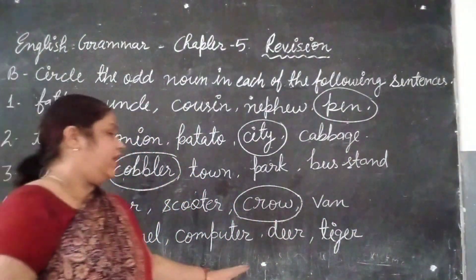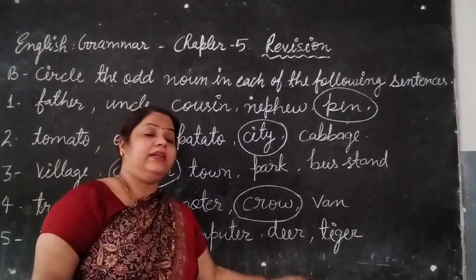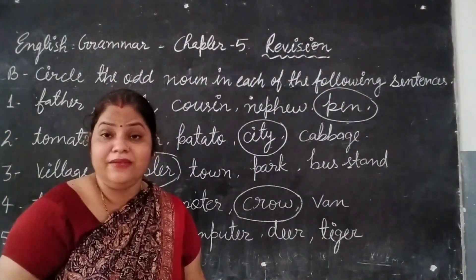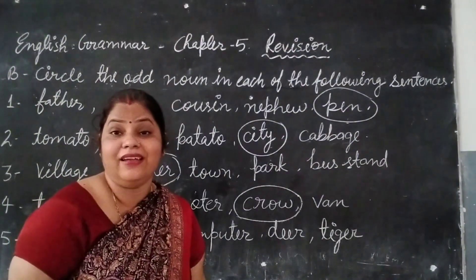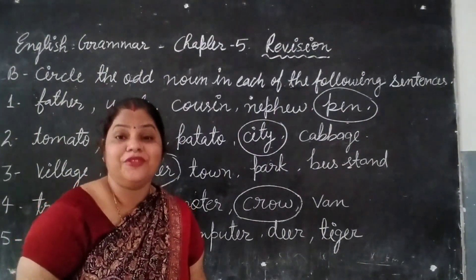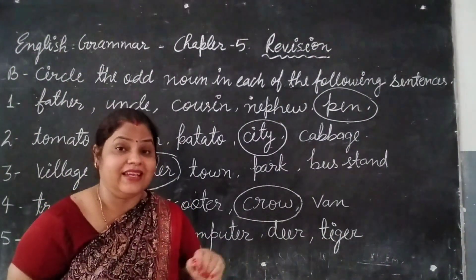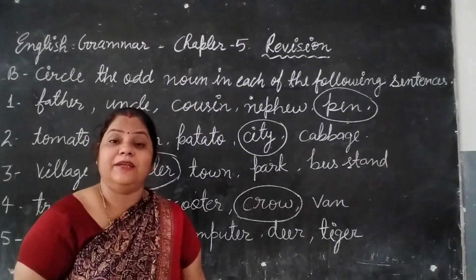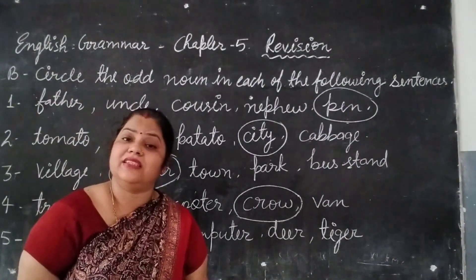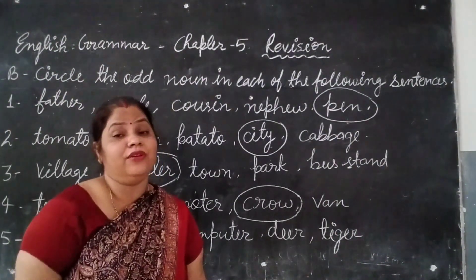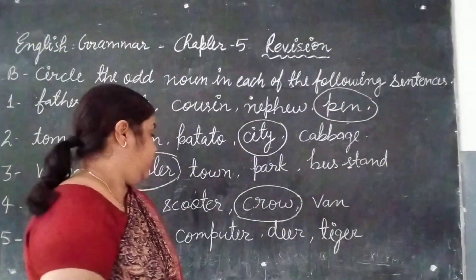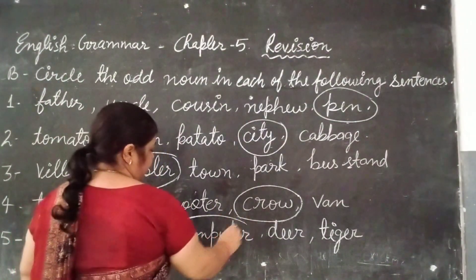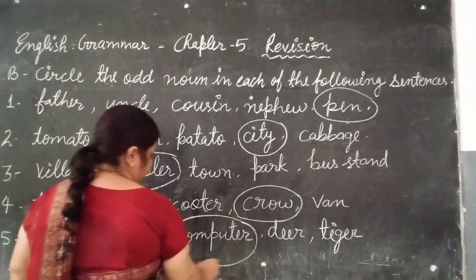Fifth question: camel, computer, deer, tiger. Camel, deer, and tiger are all animals. Computer is not an animal — it is a machine used for internet and work. So computer is the odd one out. Circle computer.